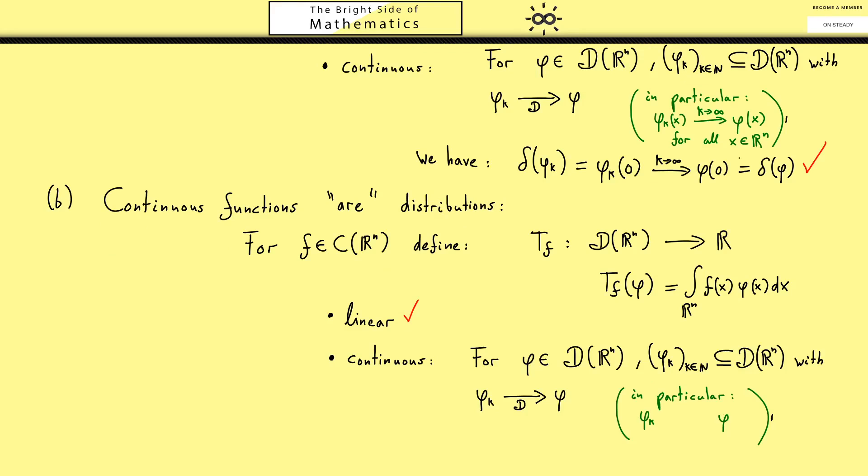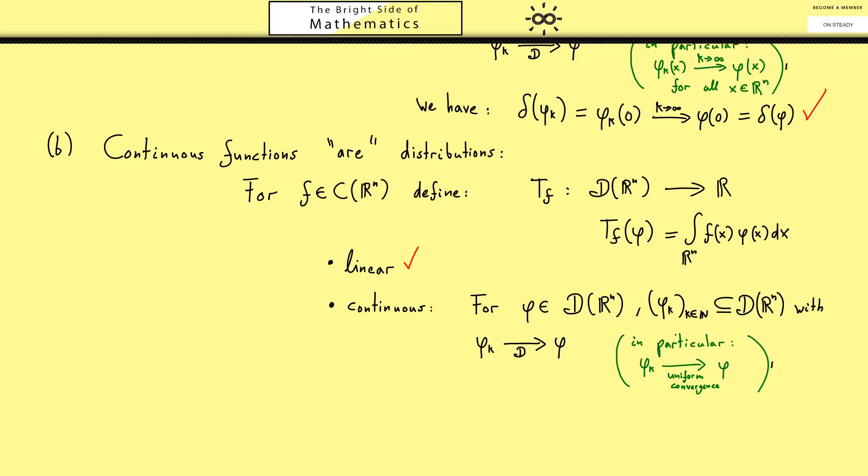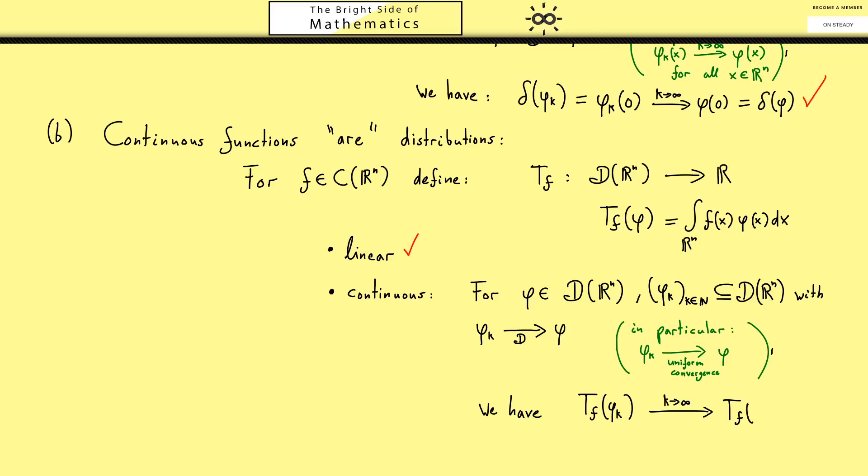For the continuity I can copy that from before. The only difference now is that we don't need the pointwise convergence but rather the uniform convergence, which is also included in our D convergence. In fact that is what we can use for the limits of the integrals. I skipped writing that down for the integrals because we will do this in more detail in the next video.